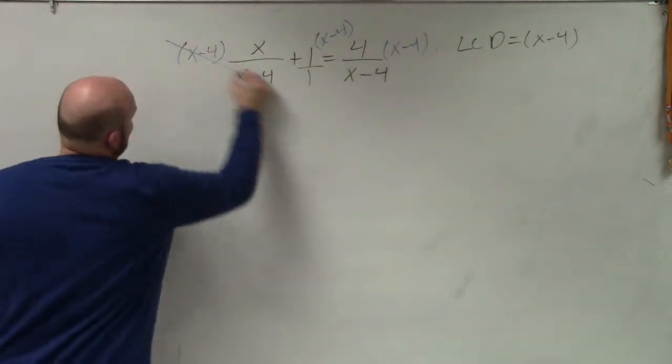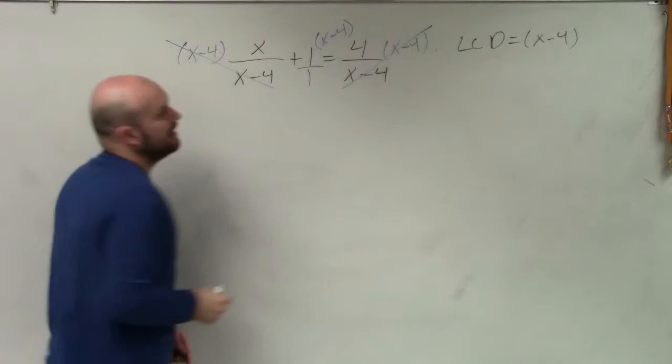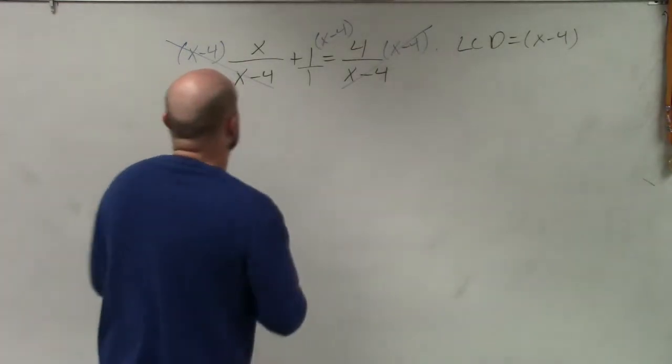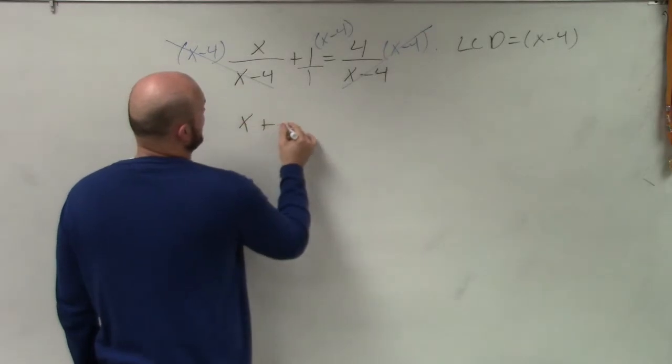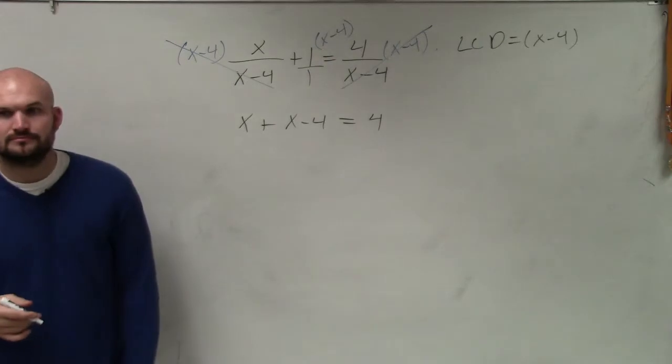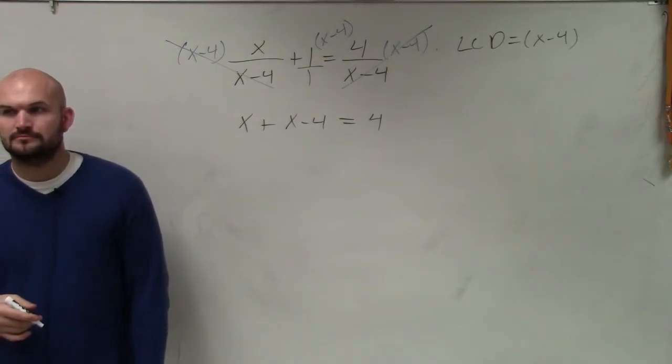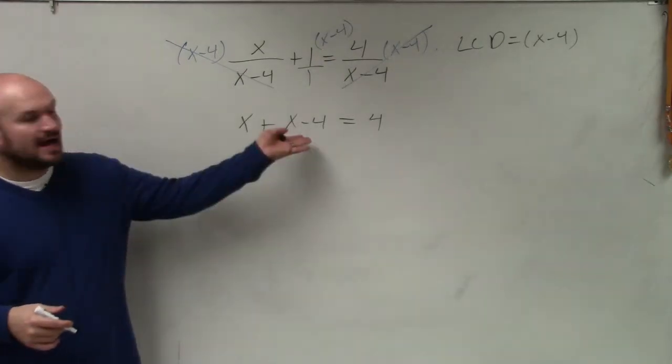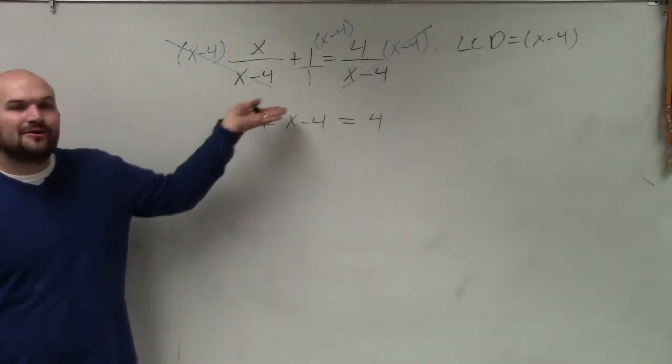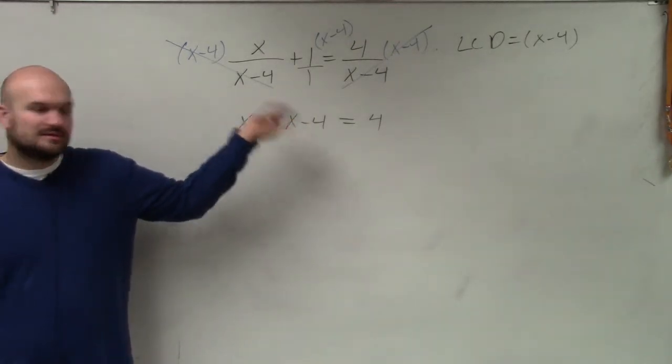Now I can apply my division property, and I get rid of my fractions. So what I have here now is x plus x minus 4 equals 4. Okay. Now we can easily solve this. Do you guys see by multiplying by your LCD? Now I don't have any fractions. So therefore,